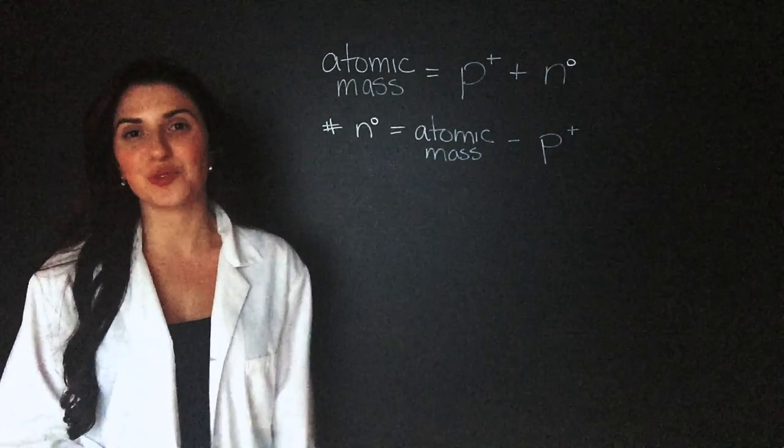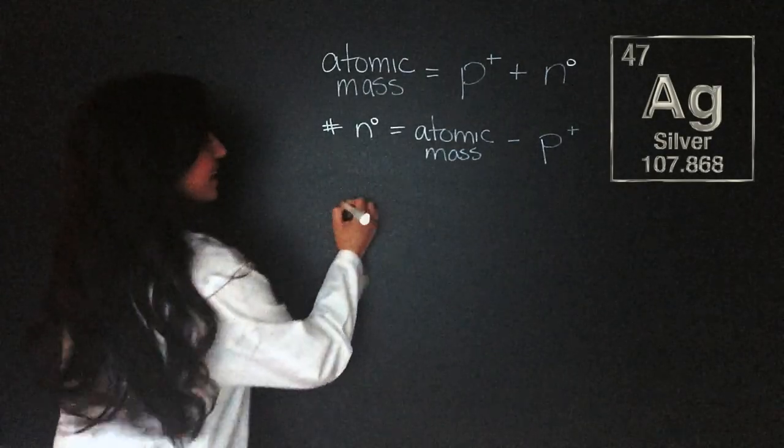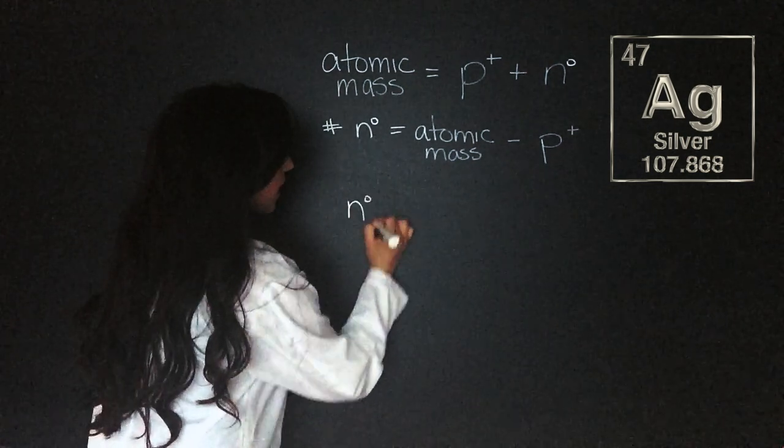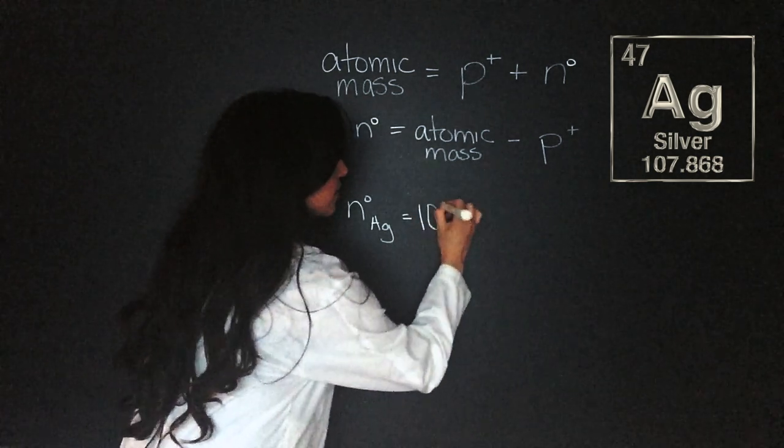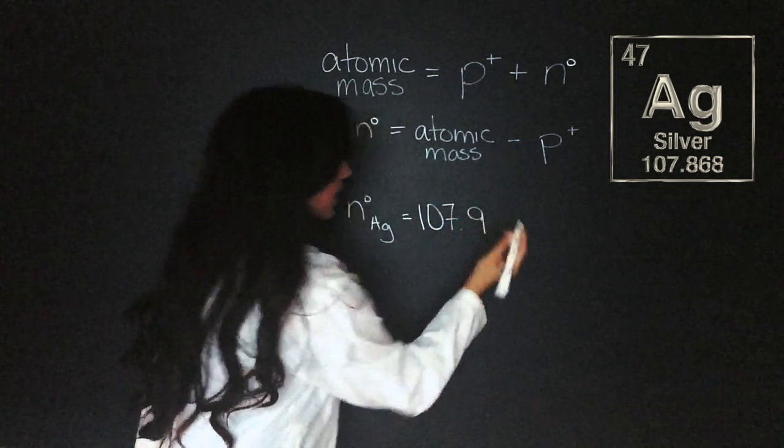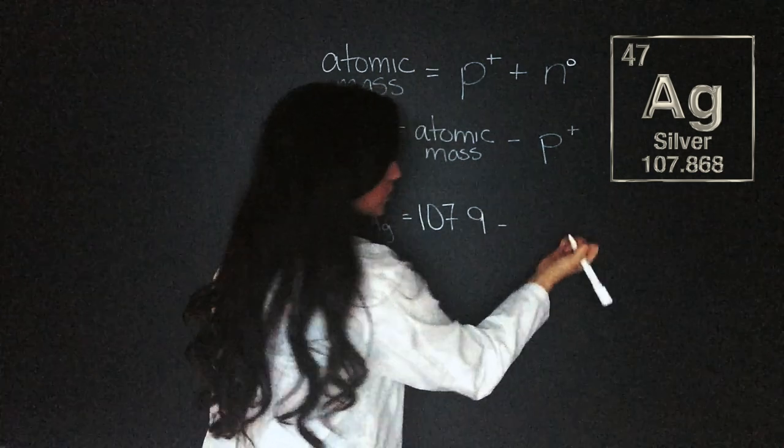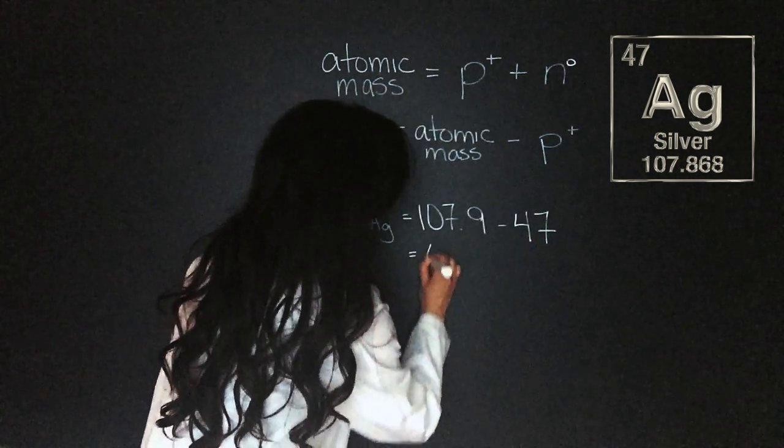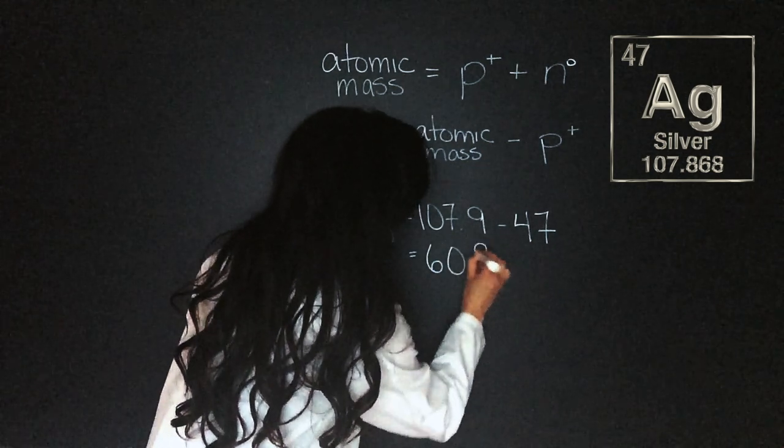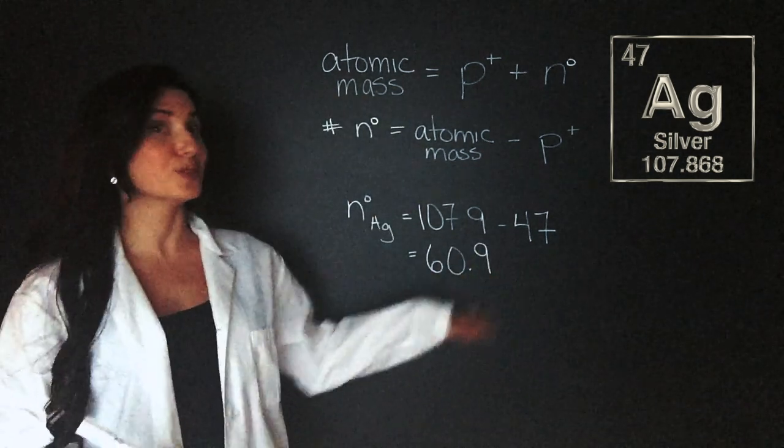Just for fun, we'll do one more example. The number of neutrons of silver. Silver has an atomic mass of 107.9 and the protons, which is the atomic number, is 47. That leaves us with 60.9 neutrons. Huge difference.